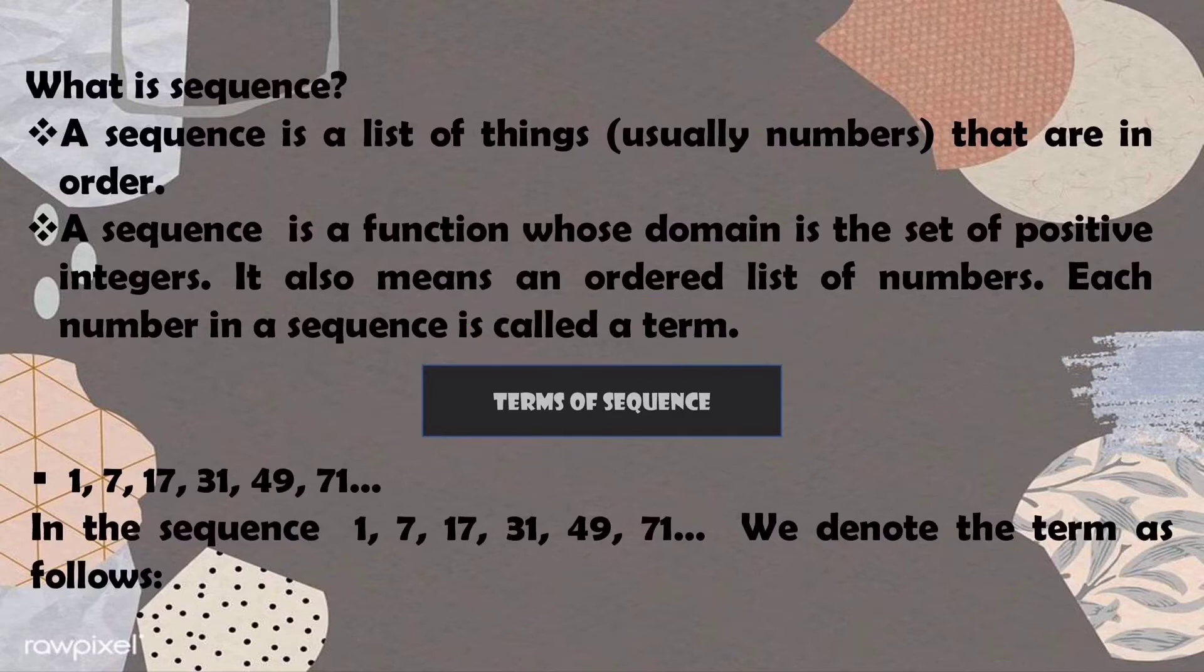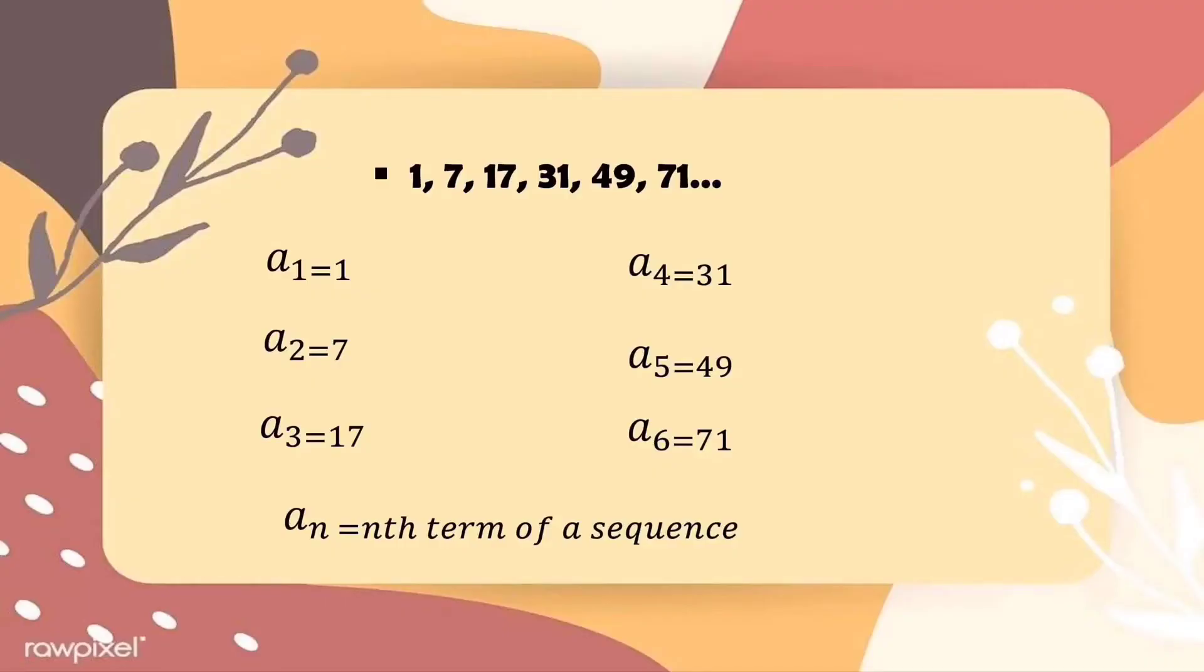So 1, 7, 17, 31, 49, 71 is an example of a sequence. And we denote the term as follows. So a sub 1, that is our first term. Our second term is 7. We denote this as a sub 2.